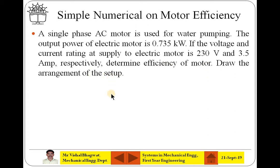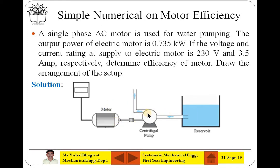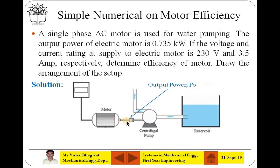After understanding the problem, one must draw the block diagram of these equipment so that the problem can be easily solved. Here you see this is a centrifugal pump where water is pumped from the reservoir and supplied to the desired location. For this purpose, the prime mover — that is the electric motor — is utilized, which receives input power from the electric supply where voltage is 230V and current is 3.5A. The output for the motor is the rotation of the shaft.